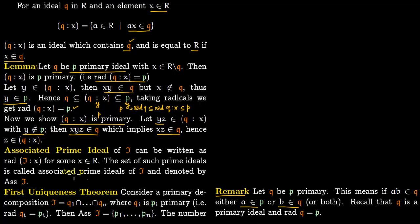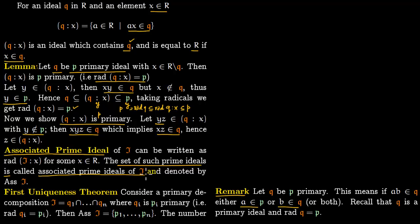Now let us define the associated prime ideals of an ideal I. The associated prime ideals are the radicals of the form radical(I/x) for some X in ring R. The set of such prime ideals is called the associated prime ideals of I, denoted Ass(I).